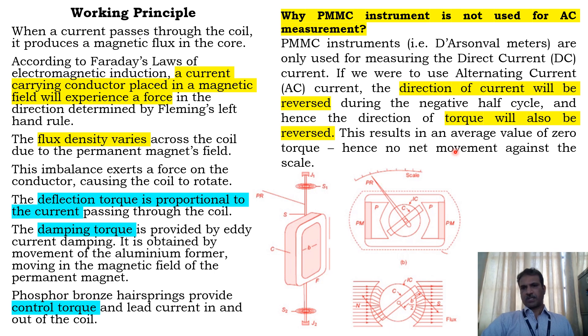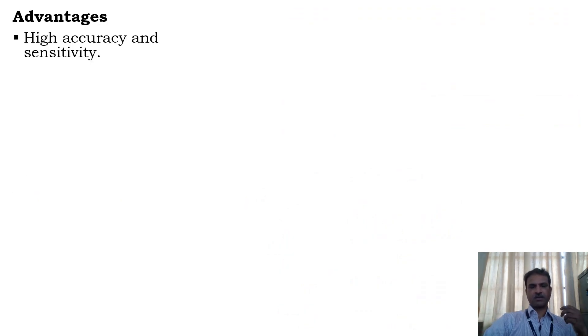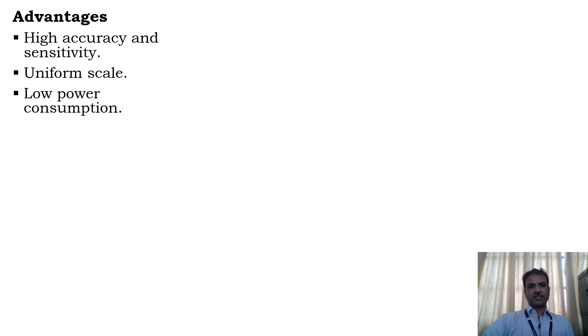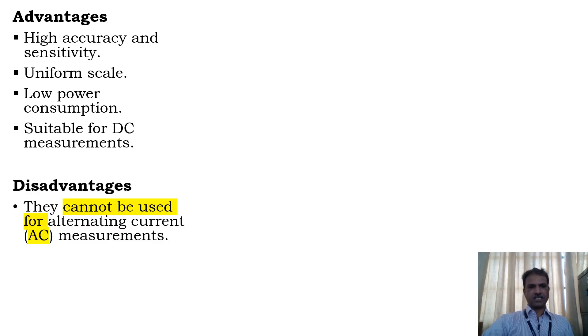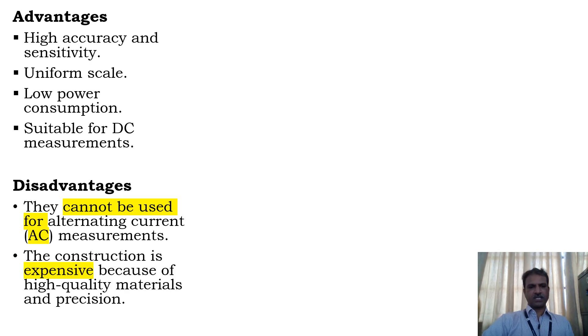Next, let's see some advantages and disadvantages of the PMMC instrument. It has high accuracy and sensitivity, it has a uniform scale, it has low power consumption, and obviously it is suitable for DC measurement. Let's see some disadvantages. They cannot be used for AC measurement.